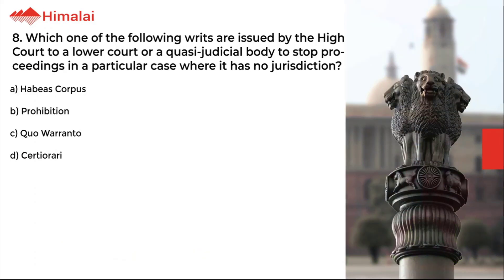Question number 8. Which one of the following writs is issued by the High Court to a lower court, requiring a judicial body to stop proceedings in a particular case where it has no jurisdiction? a. Habeas corpus, b. Prohibition, c. Quo Warranto, d. Certiorari. The correct option is B.